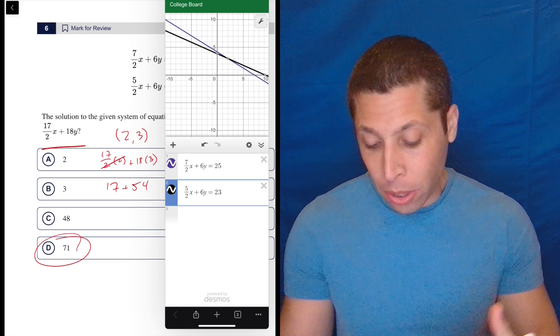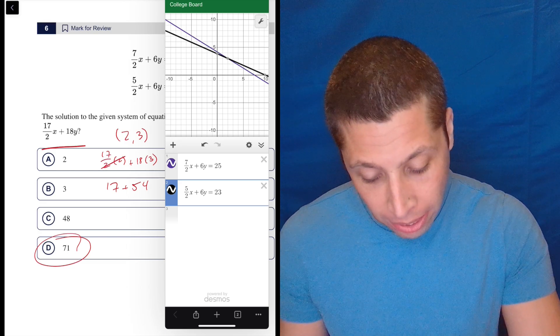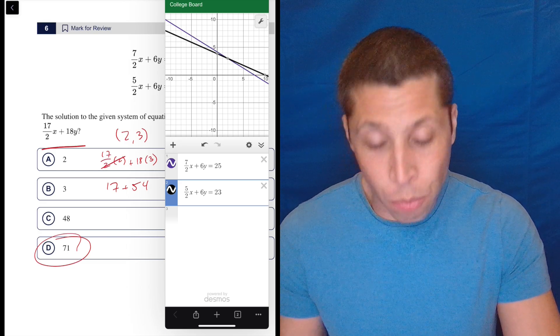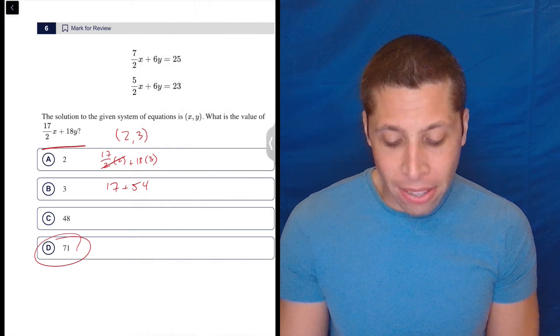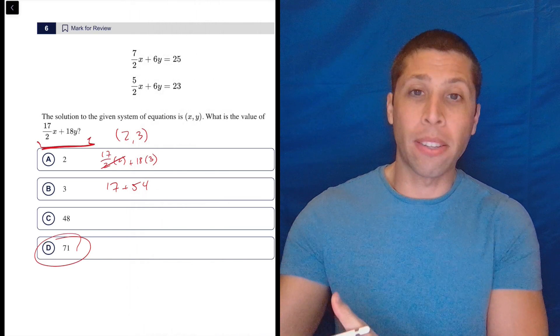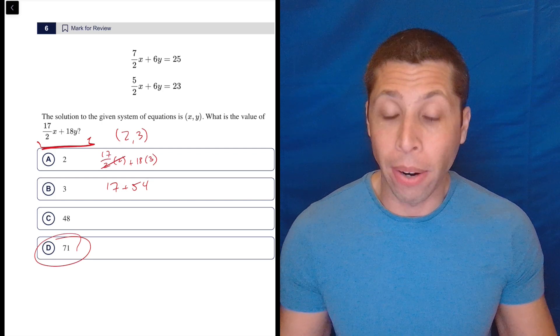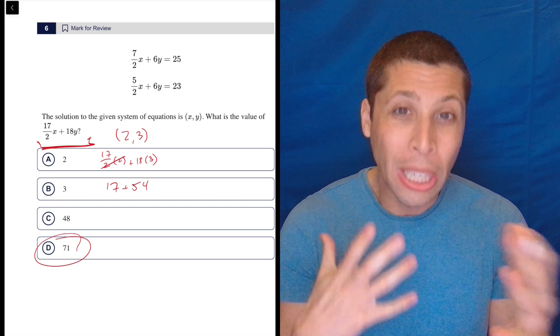Again, you could have put this in Desmos to figure out that last bit. You just got to make sure you actually figure out that they're not asking for the value of x or the value of y, right? They're asking for this kind of weird combination.